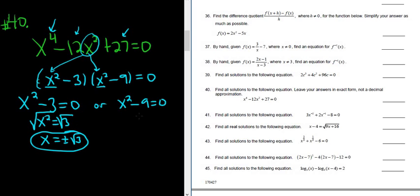And then same thing here. You'll add the 9. Take the square root. And again, don't forget the plus or minus. So plus or minus 3.